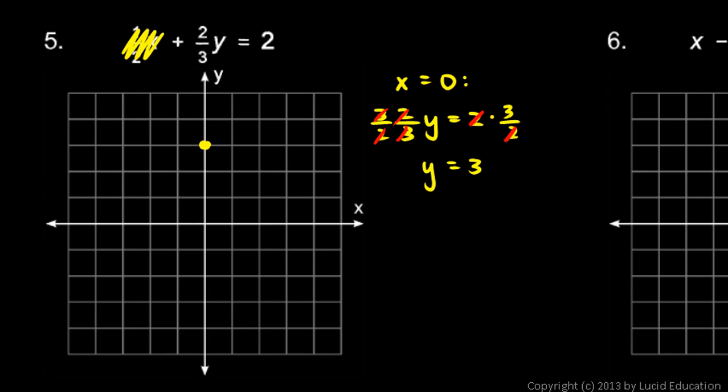So if x is zero, y is three. And then I'll let y equals zero. So if y equals zero, two-thirds y equals zero, and that leaves me with one-half x equals two. And that's pretty easy to solve. Just multiply both sides by two, and you're left with x equals four. So the y-intercept is three, the x-intercept is four. And you can sketch the line through those two points.